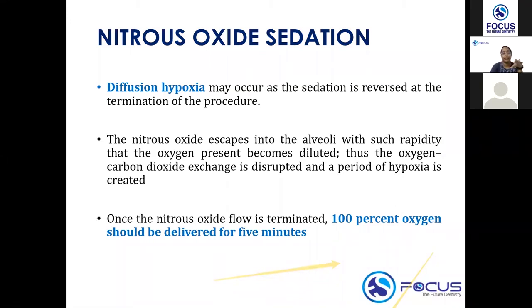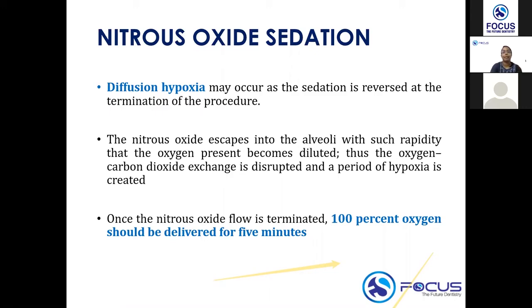Diffusion hypoxia occurs when sedation is reversed — once the procedure is done and the nitrous oxide flow is terminated. What happens is that nitrous oxide rapidly escapes into the alveoli, fully diluting the oxygen present there. Because of this, the child will be hypoxic for a period — this is called diffusion hypoxia. To avoid it, once the nitrous oxide flow is terminated, you give 100 percent oxygen for around five minutes.